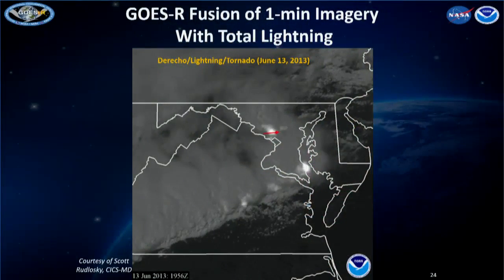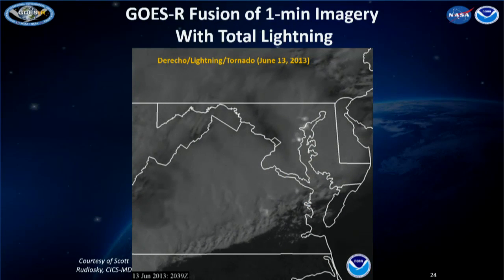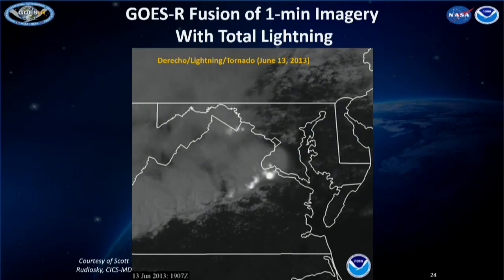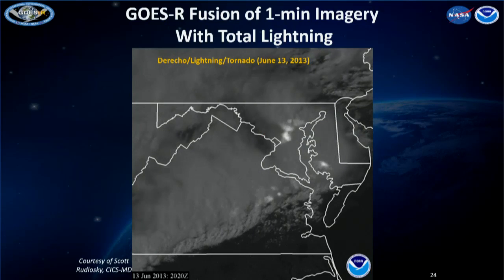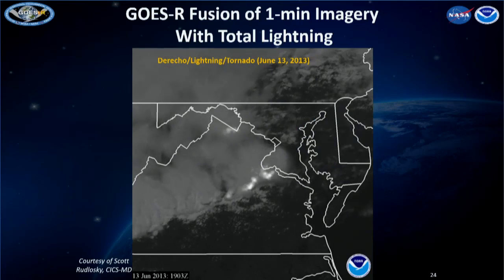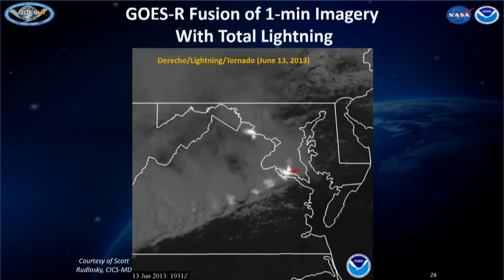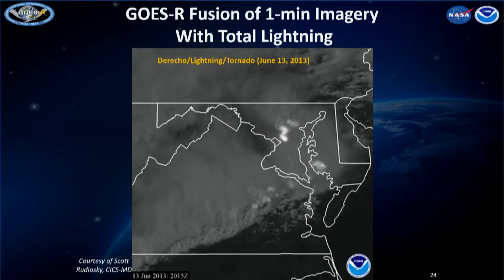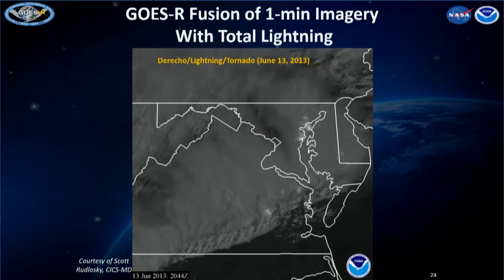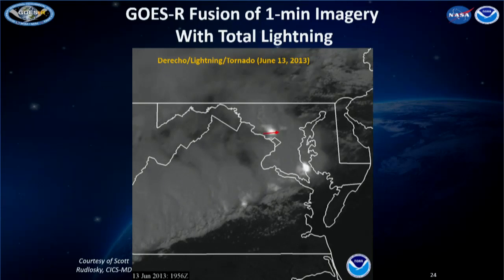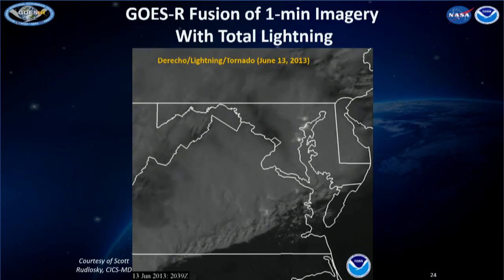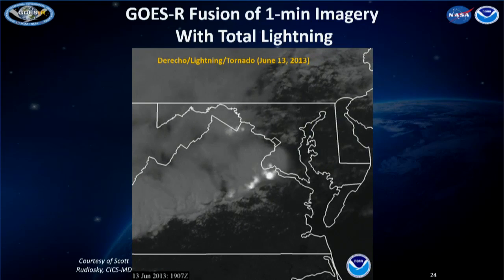Here's an example combining the lightning mapper with rapid-scan imagery. This shows a derecho that went through Maryland — the red lines represent two tornado tracks. When the tornado gets going, there's a brightening in the lightning flash rate, indicating that the lightning rates have increased. This is one way we're exploring how to combine these different datasets, though this isn't necessarily how it would appear on air.